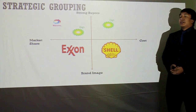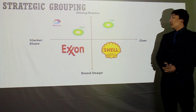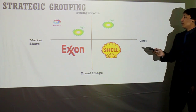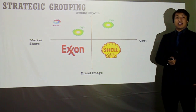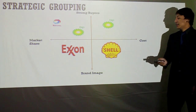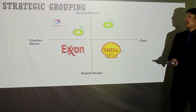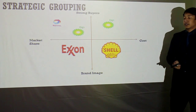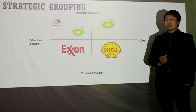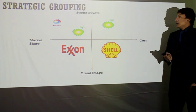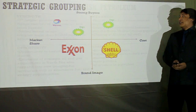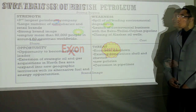Strategic grouping of BP, Total, and their competitors. BP has strong buyers and a higher cost, whereas its competitors' action and sales are only in the market due to their market share and brand image. Total has a higher market share and strong buyers.